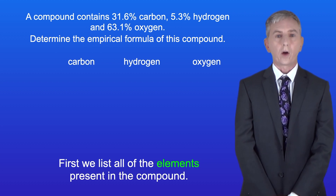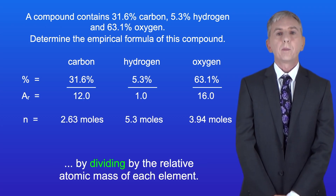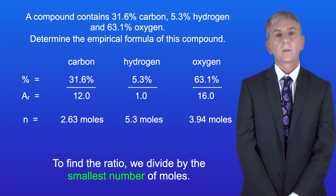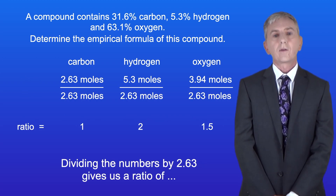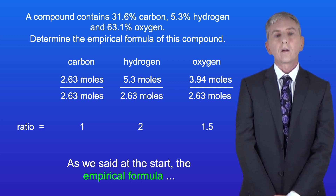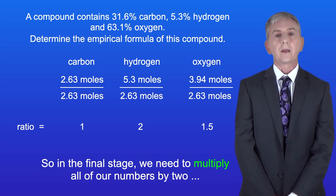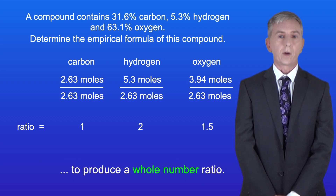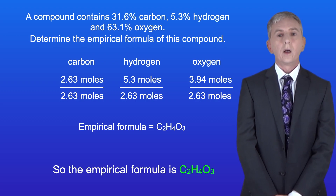First we list all of the elements present in the compound. We then write the percentages of each element underneath. Next we calculate the number of moles by dividing by the relative atomic mass of each element. To find the ratio we divide by the smallest number of moles — in this case 2.63. Dividing the numbers by 2.63 gives us a ratio of one carbon to 2 hydrogens to 1.5 oxygens. Since the empirical formula must be the simplest whole number ratio, we multiply all of our numbers by 2. This gives us a final ratio of 2 carbons to 4 hydrogens to 3 oxygens, so the empirical formula is C2H4O3.